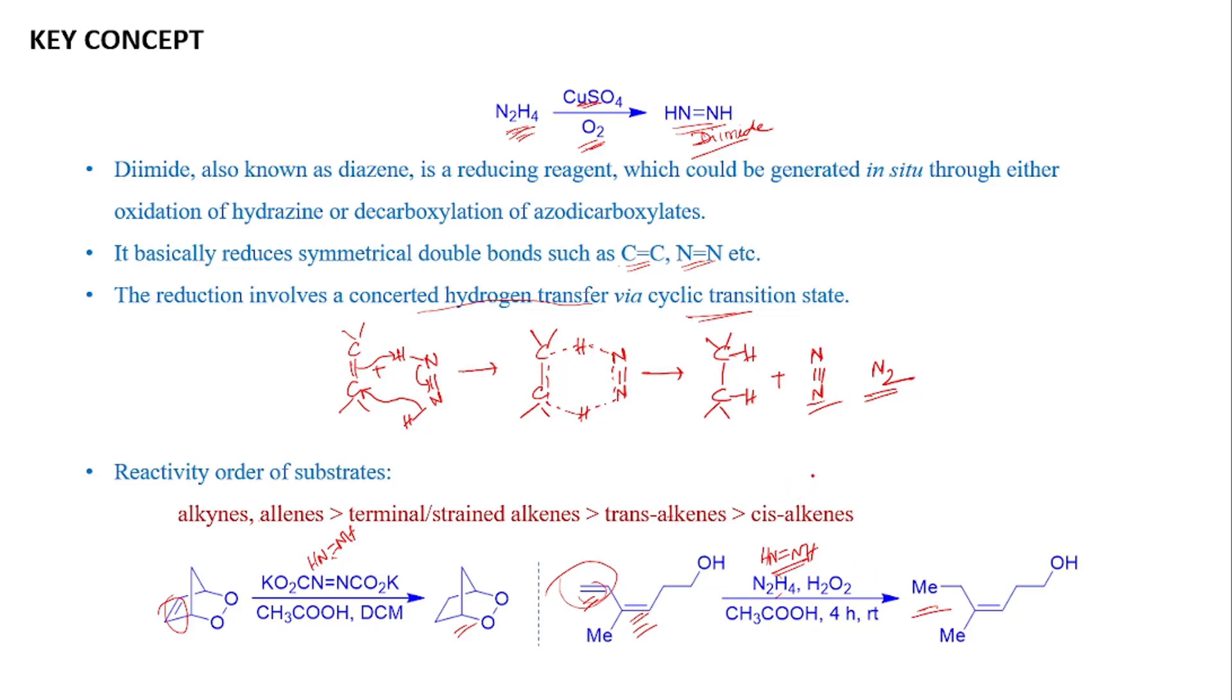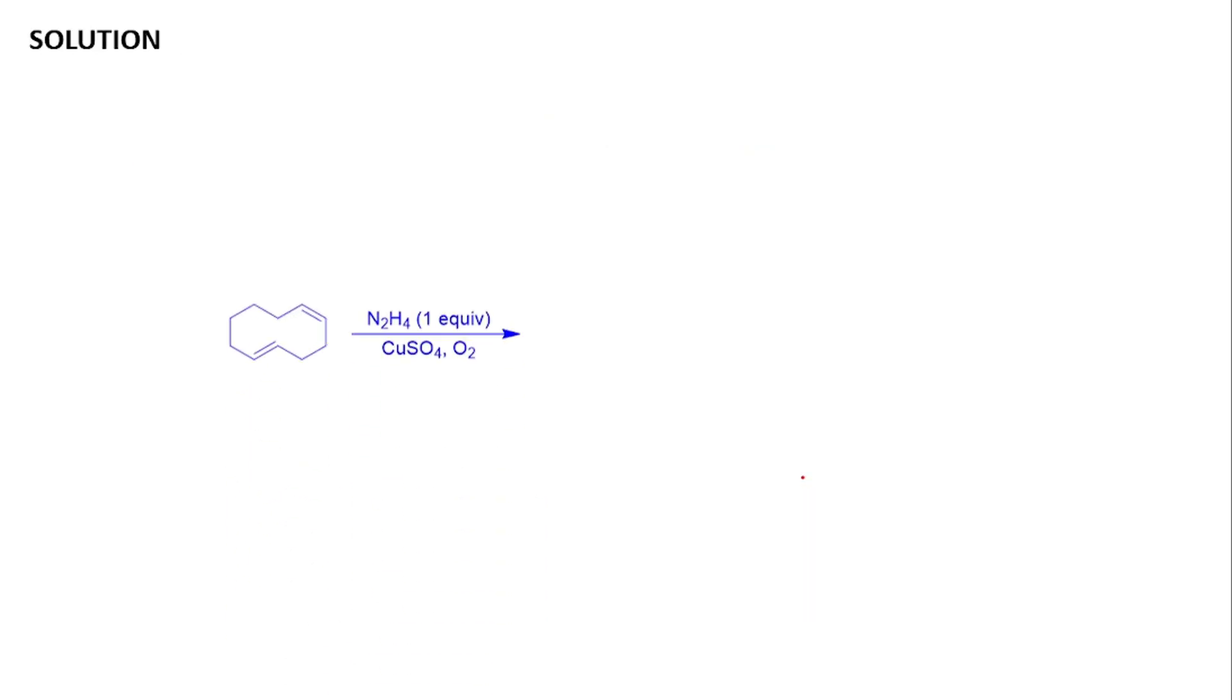With this basic information, let's move to the solution part. The question is given as this cyclic diene and then one equivalent of hydrazine and copper sulfate and oxygen. Here also, at first, diamide will be generated and now this diamide can hydrogenate either this alkene or this alkene. You see this is a cis alkene and this is trans alkene.